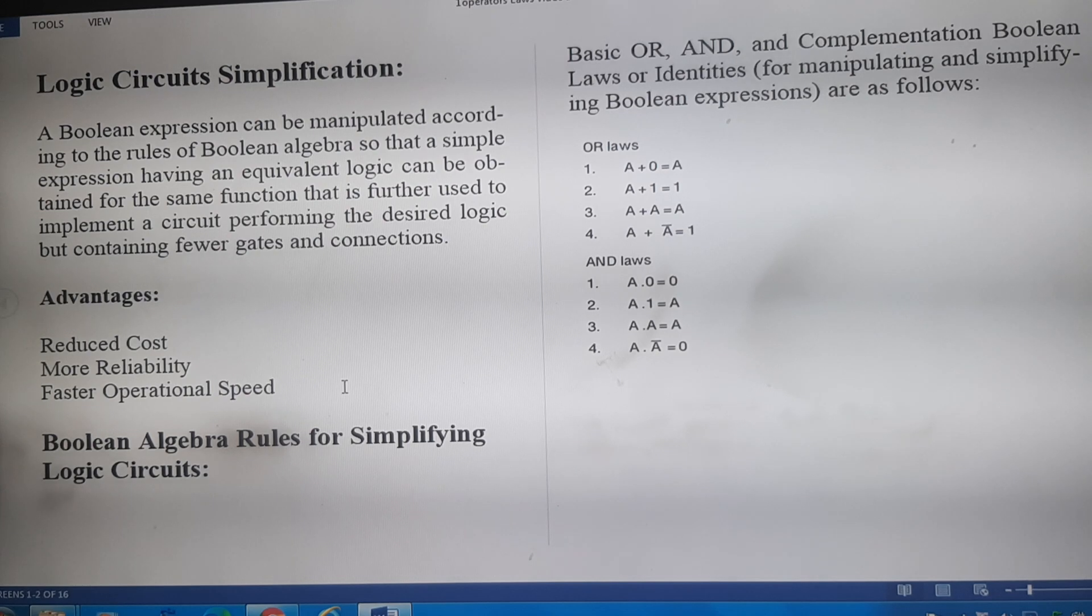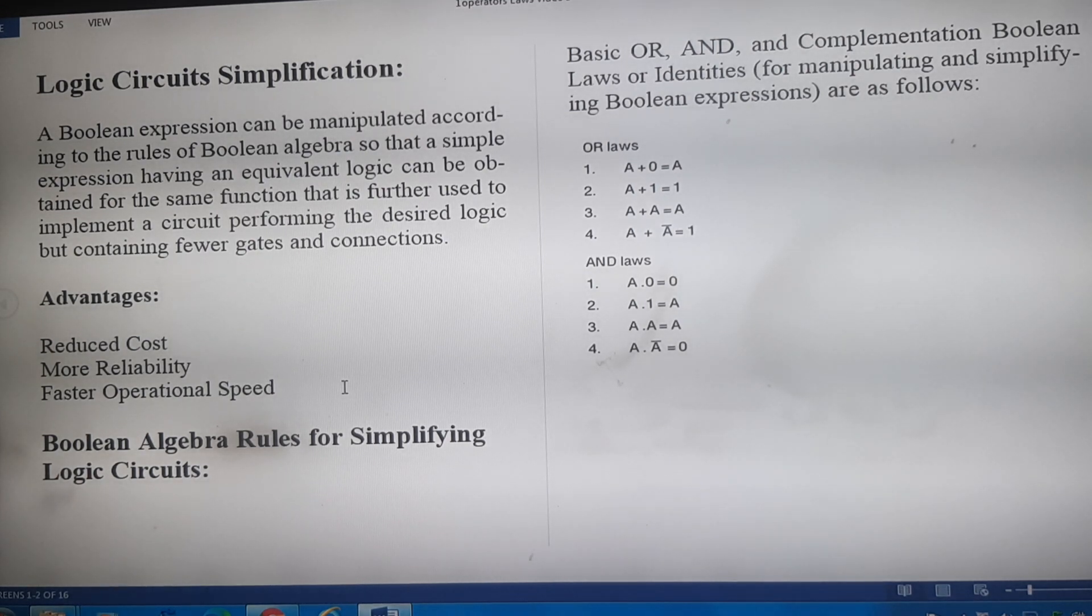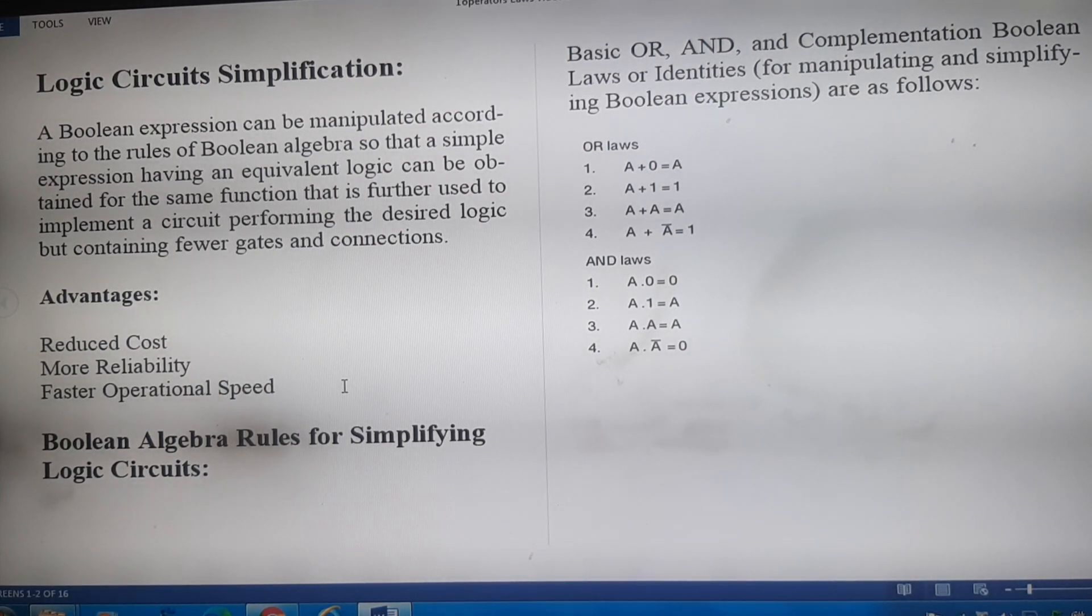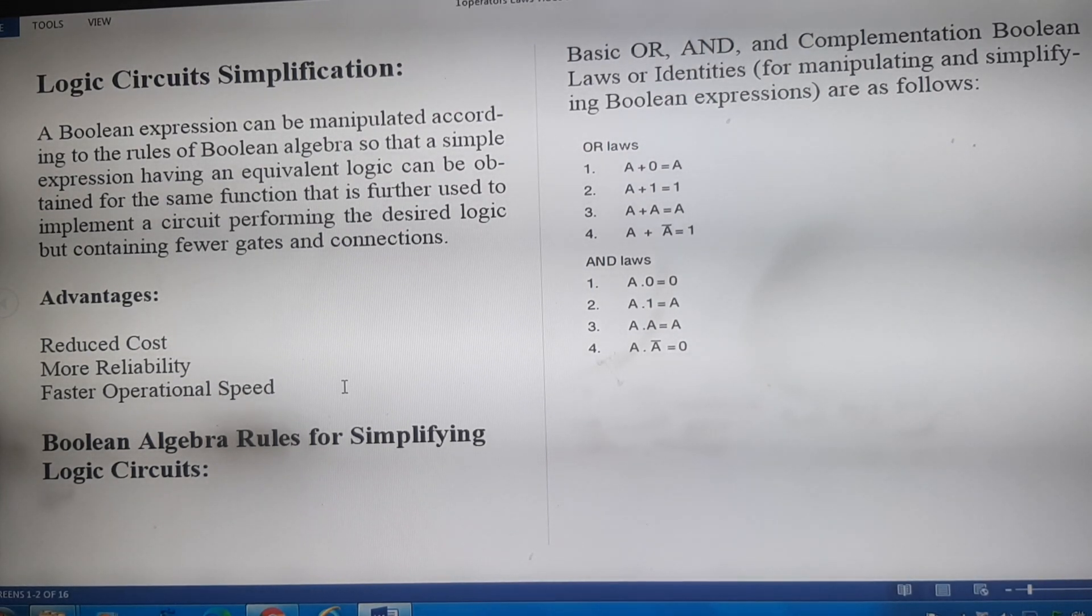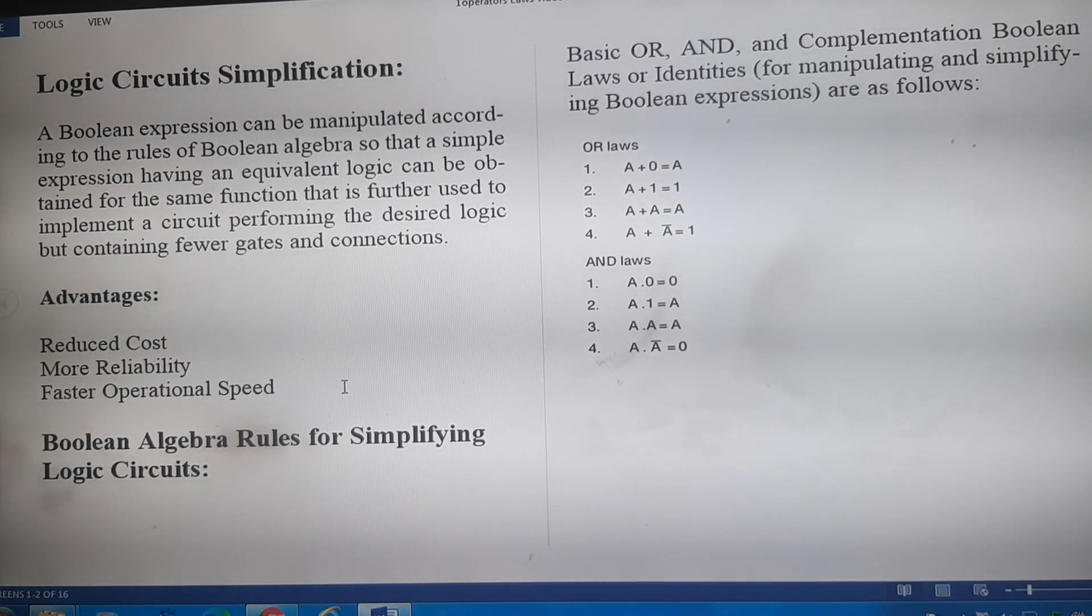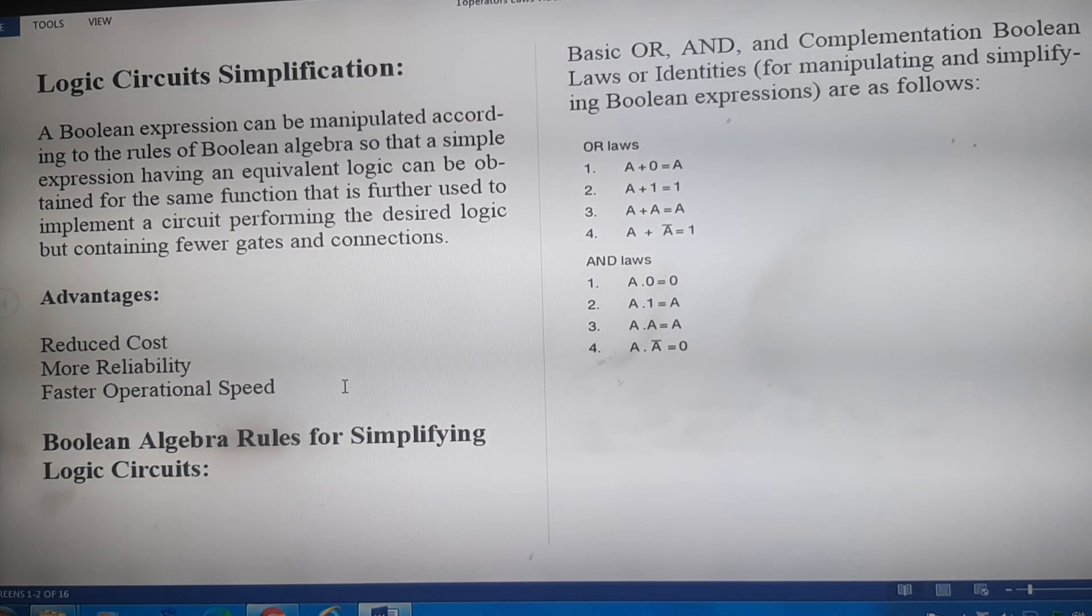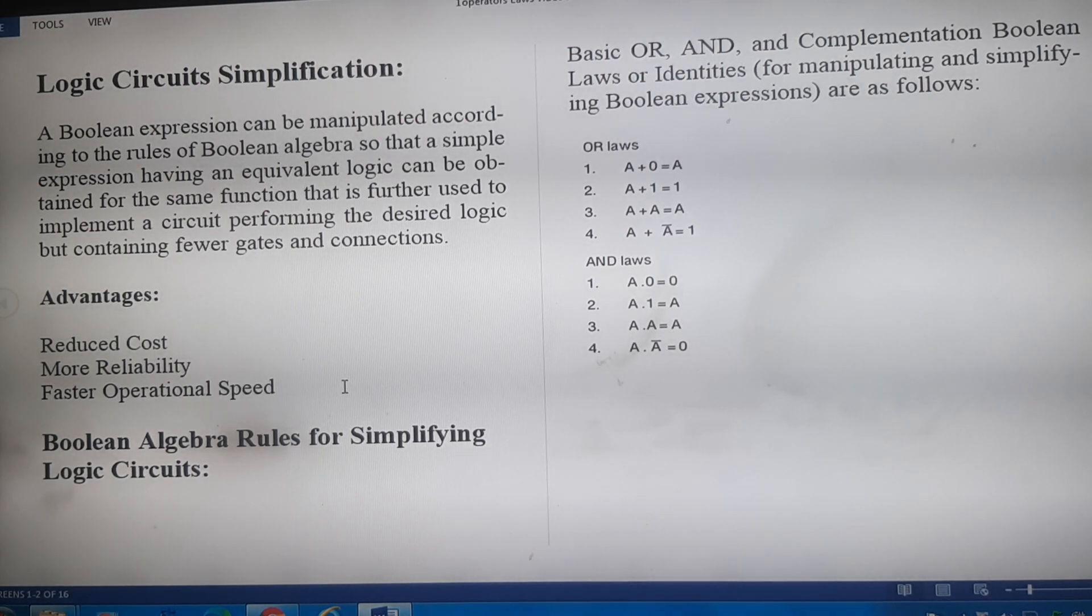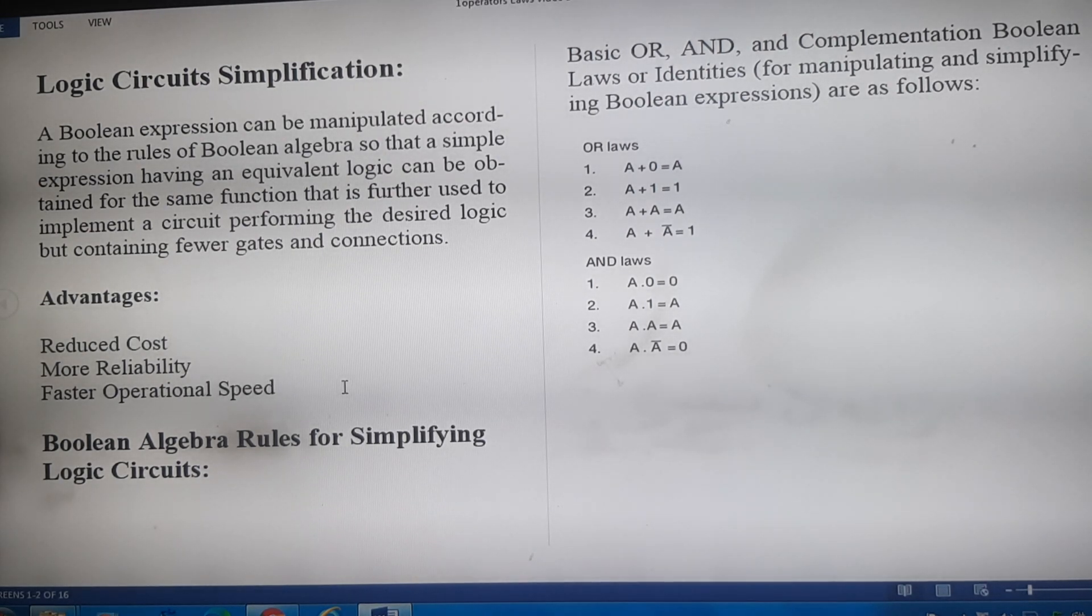There is only one way that a boolean function can be represented in a truth table. However, when a boolean function is represented in an algebraic expression form, it can be expressed in a variety of ways, all of which perform the same logic.